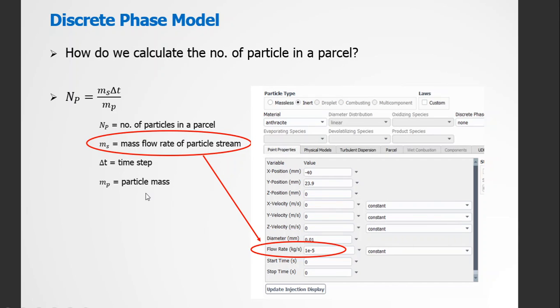mP is the particle mass. Assuming the particle is of spherical shape, the mass of particle can be calculated by pi D cubed over 6. So in this way, we calculate the number of particles in a parcel using this main formula.